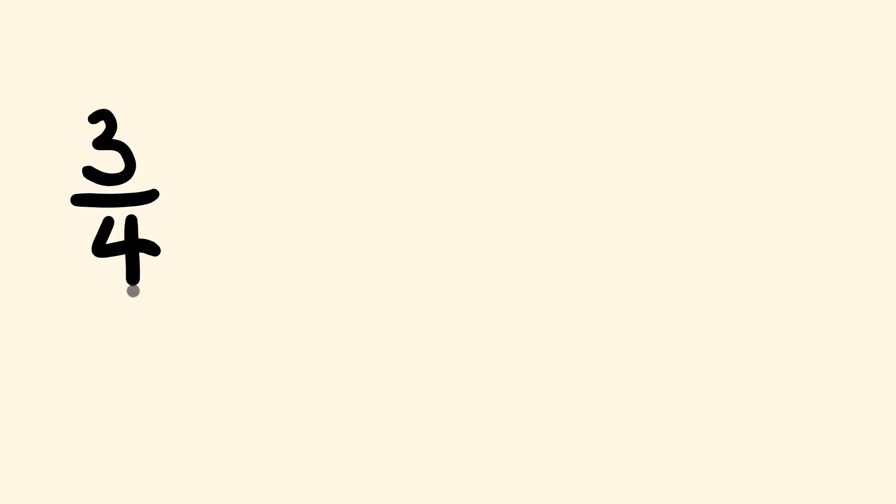So we're going to start with an example. We're going to convert the fraction 3 over 4 — 3 quarters — into its equivalent decimal. Now, this is the trick: because any fraction is really just a division problem. For instance, 3 divided by 4 — all we have to do is do this division and we'll have our equivalent decimal.